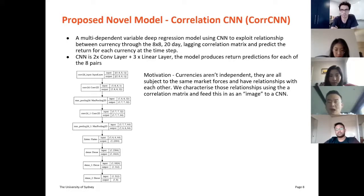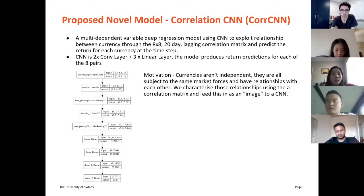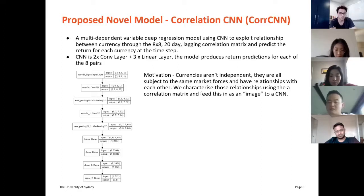The base architecture consists of two convolution layers followed by three linear layers. The model produces returns for each of the eight pairs at the next day. The motivation was threefold: our survey literature suggested that CNN-RNN combinations were under-researched and CNNs tended to produce reasonably well-performing results. Second, currencies do not operate in a vacuum — they are all interrelated and acted on by the same market forces. Therefore, by using the correlation image, we are able to exploit the relationships between currencies.